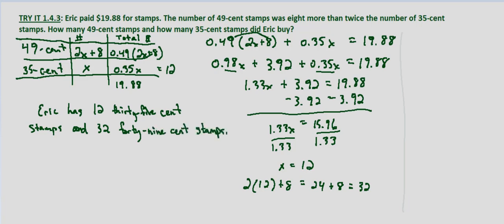So how can we check this? We simply make sure that 49 cents times the number of 49-cent stamps plus 35 cents times the number of 35-cent stamps equals $19.88. So 0.49 times 32 plus 0.35 times 12, does that equal $19.88?